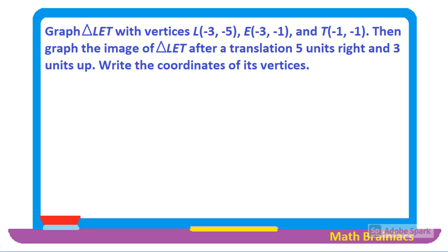Graph the triangle with vertices: L at the ordered pair (−3, −5), vertex E at the ordered pair (−3, −1), and vertex C at the ordered pair (−1, −1). Then graph the image of triangle LEC after a translation 5 units right and 3 units up, and write the ordered pairs of its vertices.